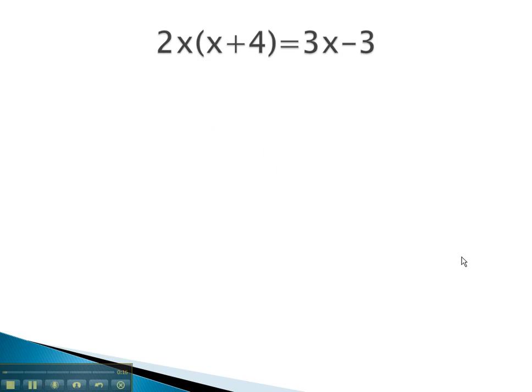For example, on this problem, it's difficult to know how to make it equal zero with the multiplication on the left. We will start by distributing through the parentheses to get 2x squared plus 8x equals 3x minus 3. Now we can see, after simplifying, the x squared is positive on the left, so we will move everything to the left side.